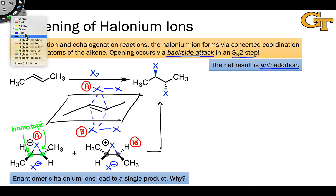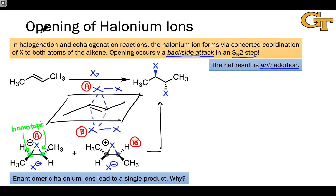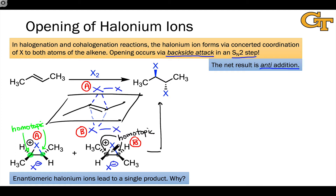And of course, the same is true of the enantiomeric halonium ion B on the right. The two carbons highlighted in black now are also homotopic — they share a homotopic relationship with one another so that they are chemically identical, and the addition of X- to either of these carbons is going to lead to the same product.